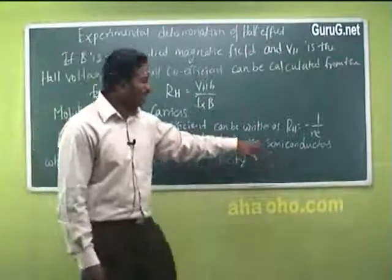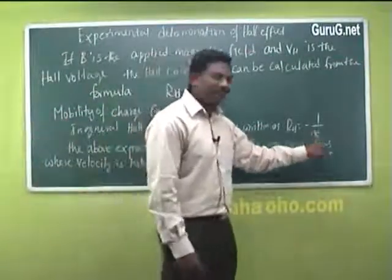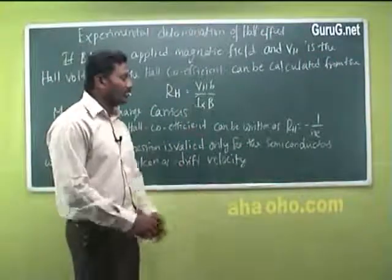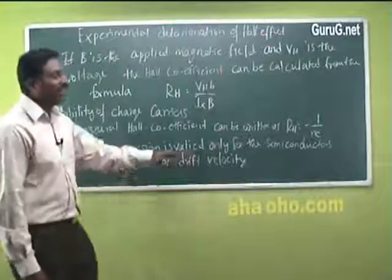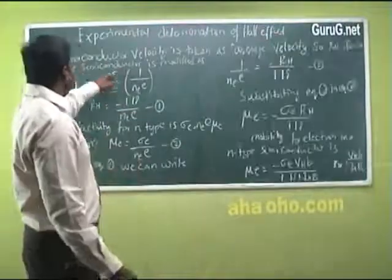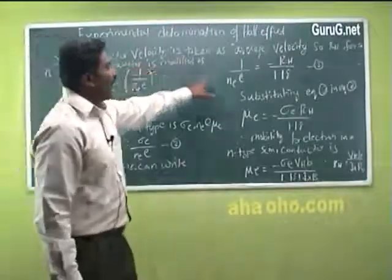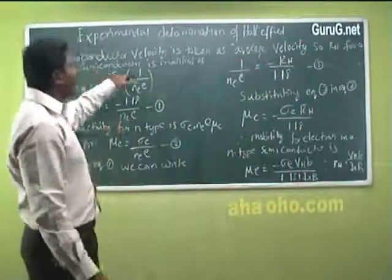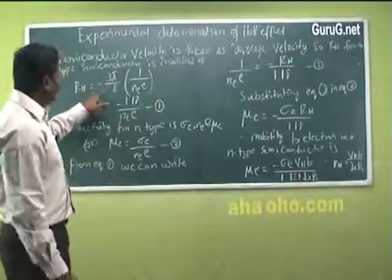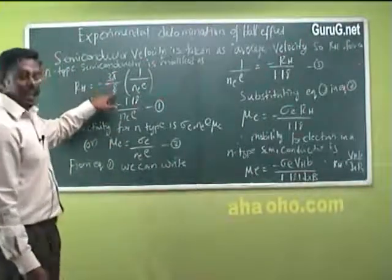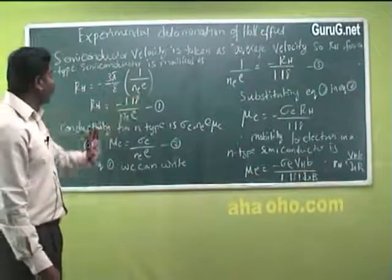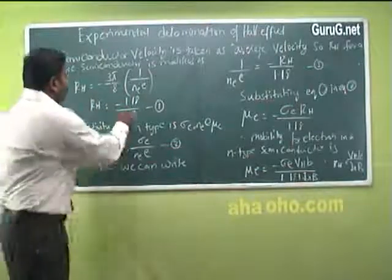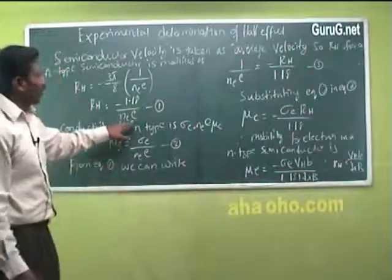In general, the hall coefficient can be written as RH equals minus 1 / (ne·e). This expression is valid only for semiconductors where the velocity is taken as drift velocity. When velocity is taken as average velocity, the hall coefficient for n-type semiconductor is modified as RH equals minus 3π/8 into 1/(ne·e), or RH equals minus 1.18 / (ne·e). This is equation number 1.